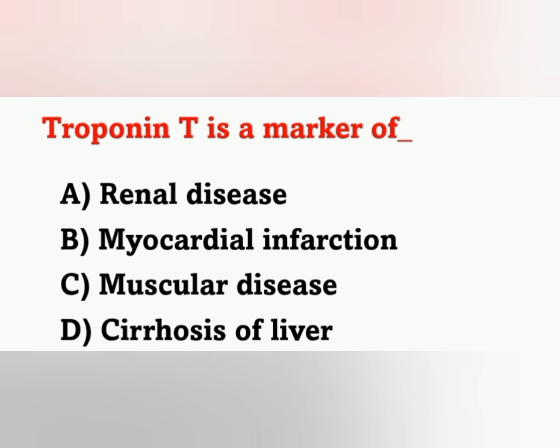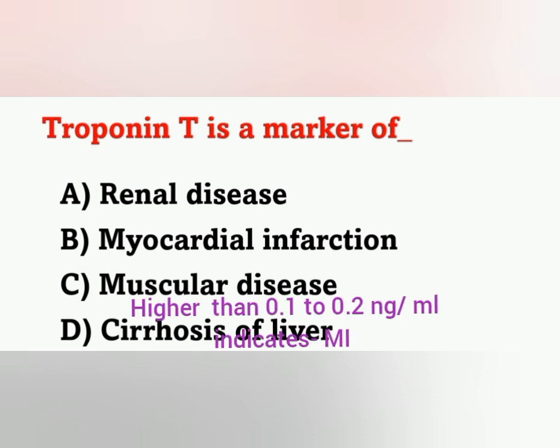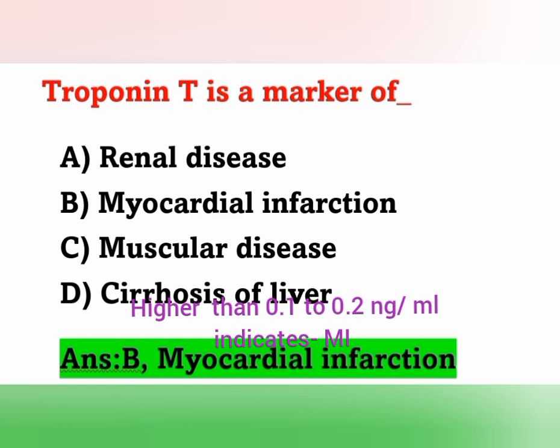Next question: Troponin T is a marker of — A) Renal disease, B) Myocardial infarction, C) Muscular disease, D) Liver cirrhosis. Troponin is a regulatory protein found in striated muscles and is one of the indicators or markers of myocardial infarction. Option B is the correct answer. A Troponin T value higher than 0.1 to 0.2 nanogram per ml indicates myocardial infarction.